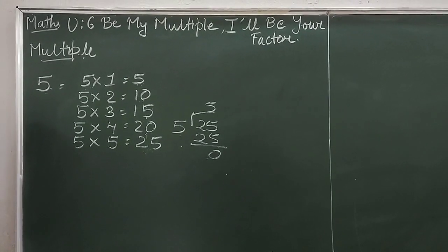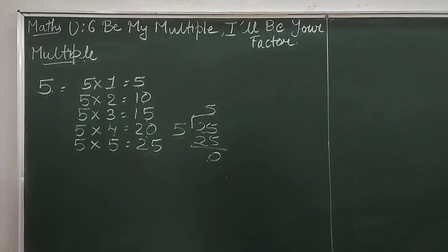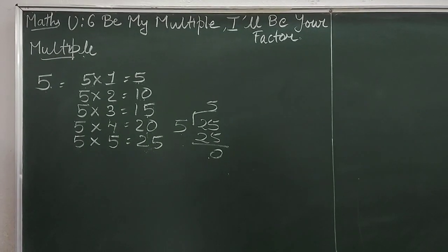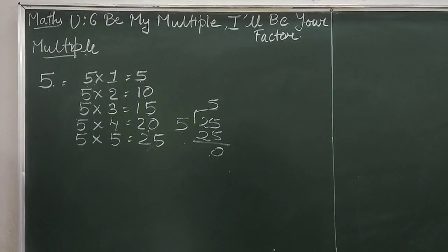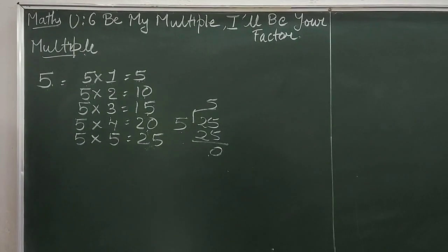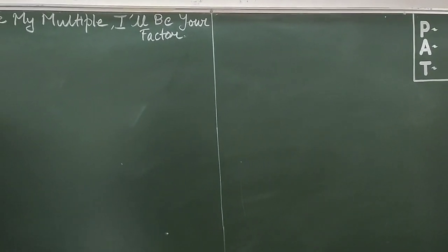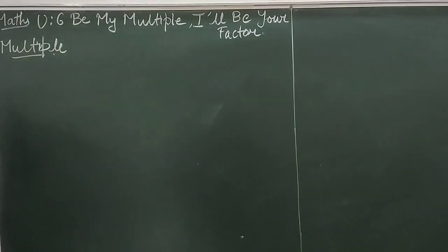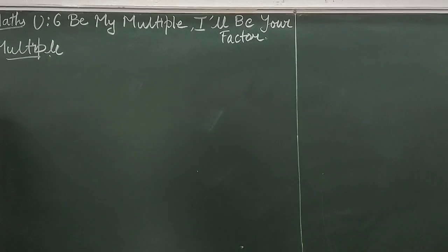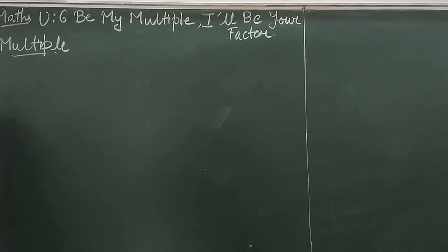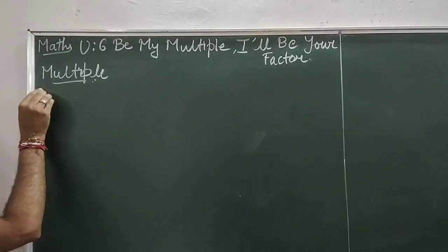Now we will write down the main points of the topic multiples. You are supposed to write them down in your notebook. Take a new page where you completed yesterday's exercise. Leave that page and take a new page, use the heading 'Multiples,' and write down the main points.